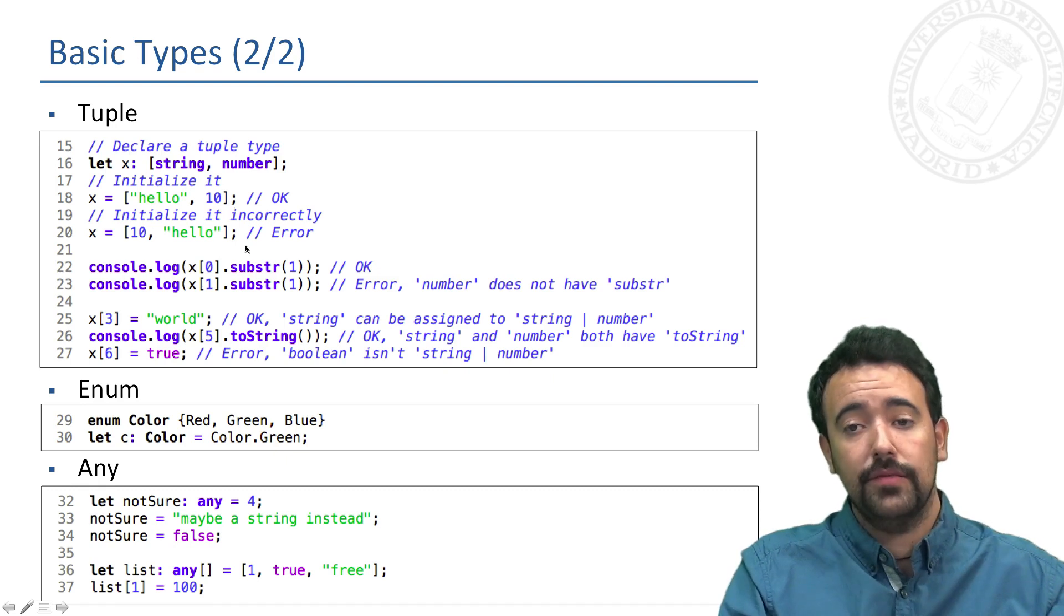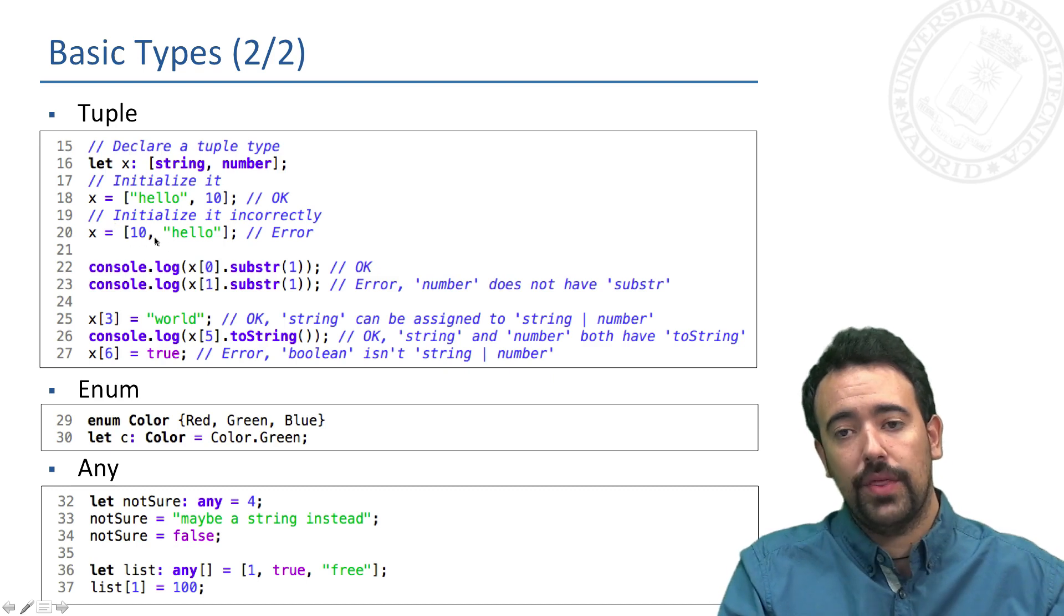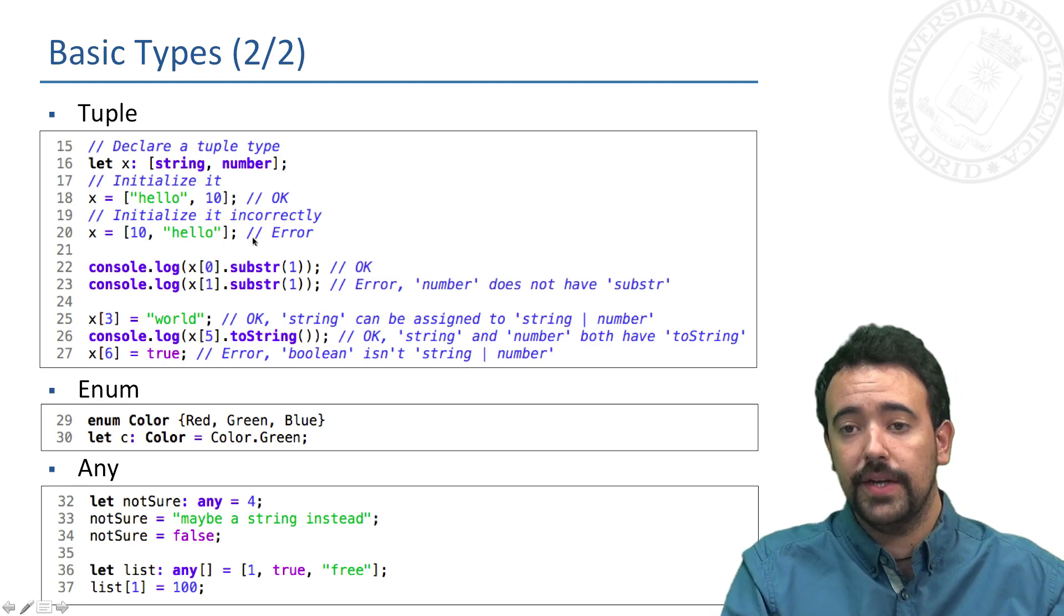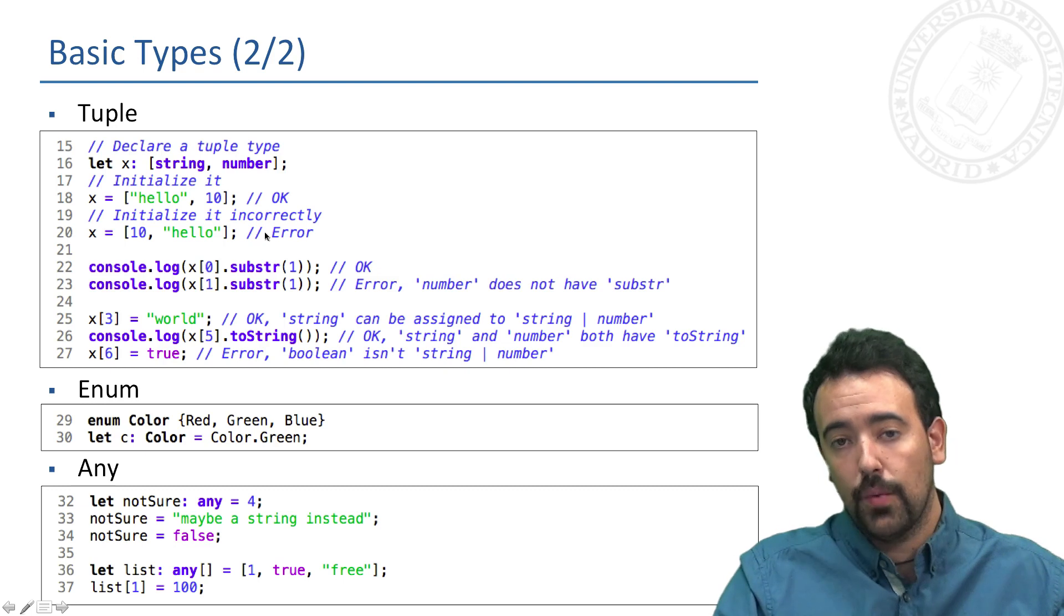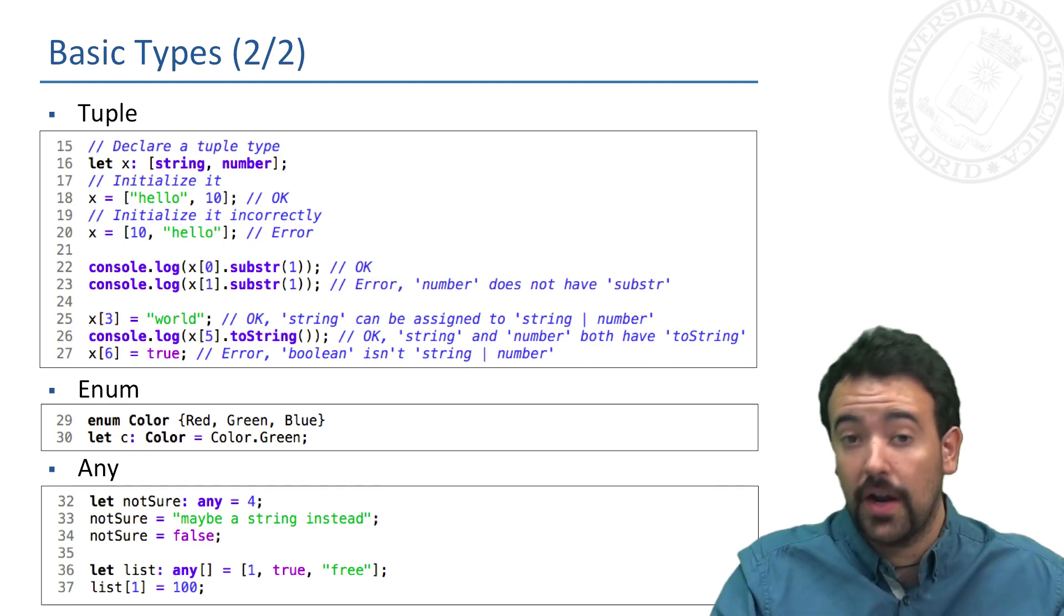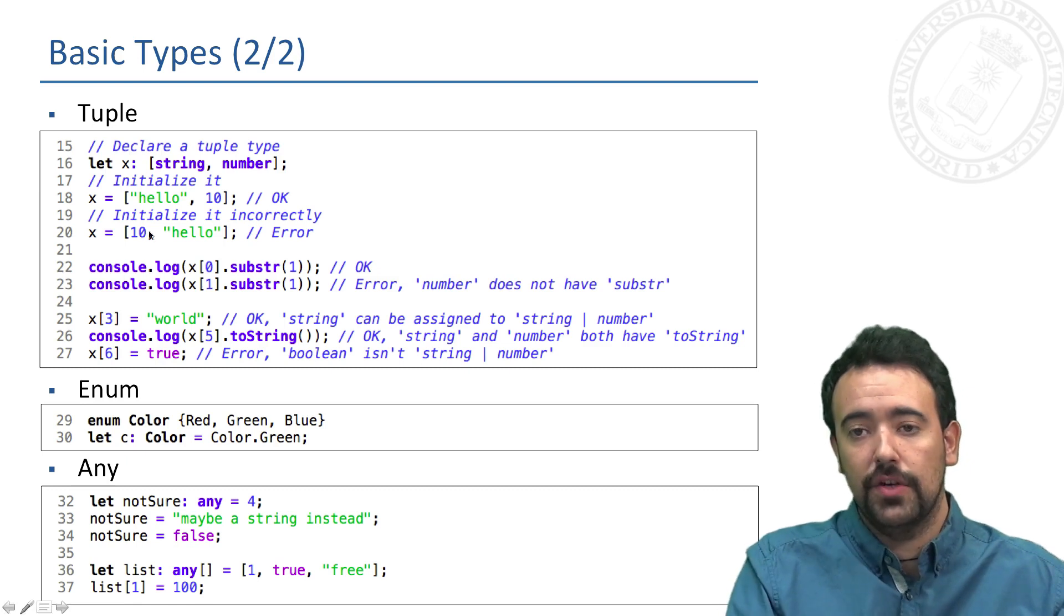But if we try to create this tuple with a first value of type number and the second one of type string, the compiler will throw an error because this is not a correct initialization of this tuple.